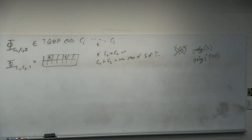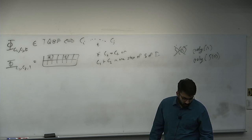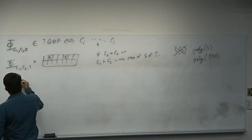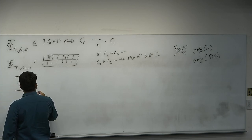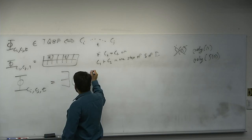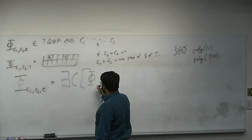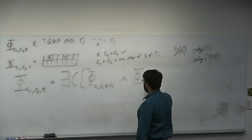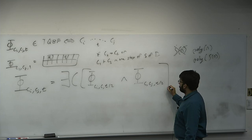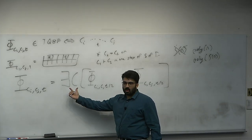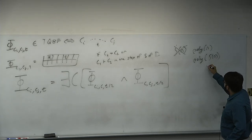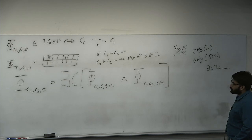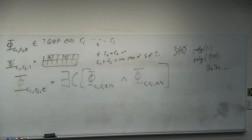Now we can define the recursive case using Savitch's theorem-style recursion. We define phi(Ci, Cj, T) as: exists C such that phi(Ci, C, T/2) AND phi(C, Cj, T/2). The 'exists C' here is a sequence of existential quantifiers encoding the intermediate configuration. This is just Savitch's theorem recast as a formula. We choose T at the end to be the full space bound.